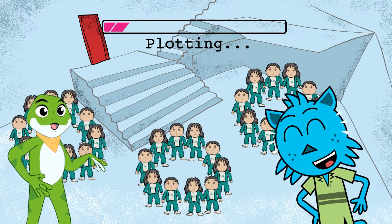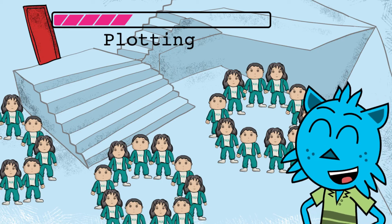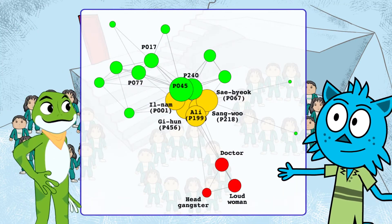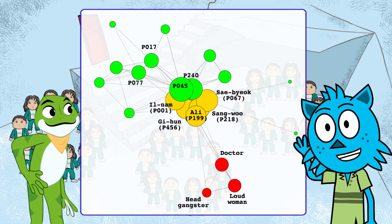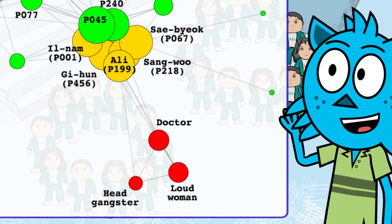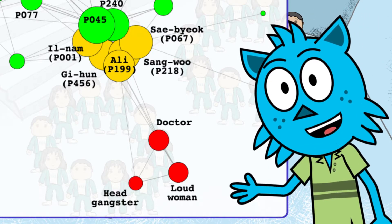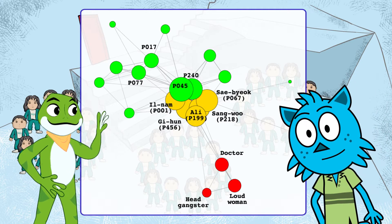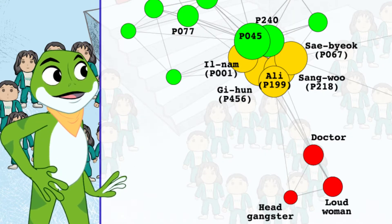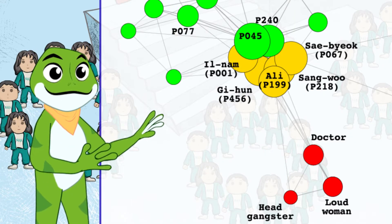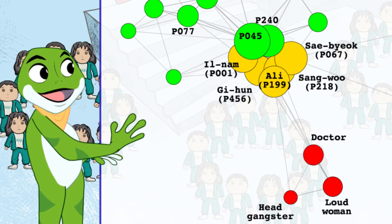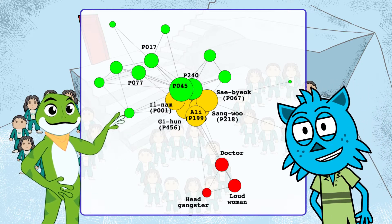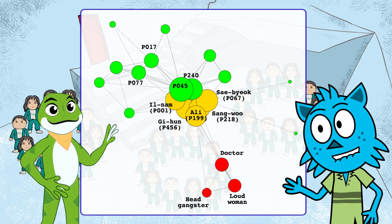That's a great idea, Zippy. Let's use red for players in the gangster group, gold for player 456 and his friends, and green for the other players. Plotting — done. The social network analysis shows that the head gangster, loud woman, and doctor interacted more with each other in red. In gold, player 456, player 1, Ali, the girl, and the scholar had a lot of interactions — which is why these players were all on the same team for the tug of war game.